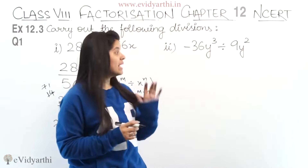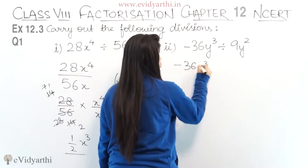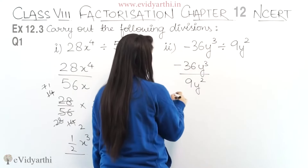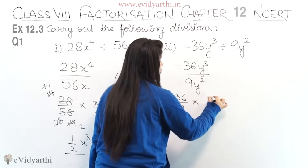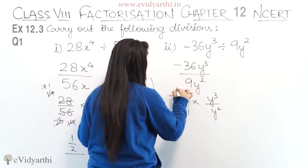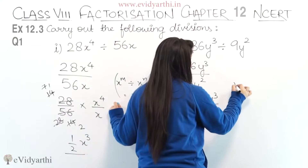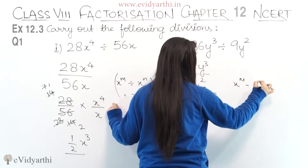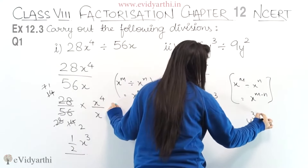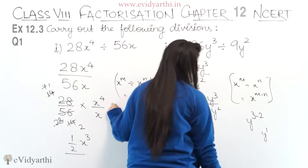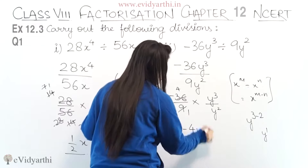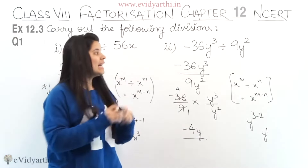Moving to the second part: minus 36y cubed divided by 9y squared. So again we divide: minus 36y cubed upon 9y squared. We separate the number and the variable. This will be minus 36 upon 9 into y cubed upon y squared. We simplify: 9 ones are 9, 9 fours are 36, giving minus 4. Then applying the law of exponents, y cubed divided by y squared gives y raised to the power 3 minus 2, which is y¹, simply y. So the answer is minus 4y.